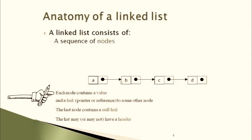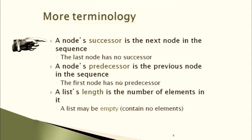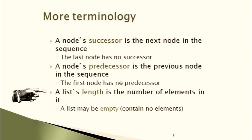The list may or may not have a header node. Here we have shown a header node called 'myList.' Now let's look at some terminology: a node's successor is the next node in the sequence, and the last node has no successor. A node's predecessor is the previous node in the sequence, and the first node has no predecessor. The list length is the number of elements.